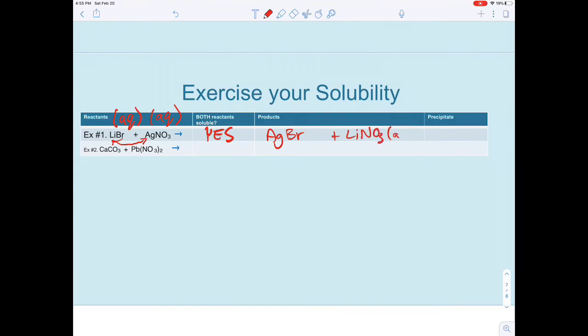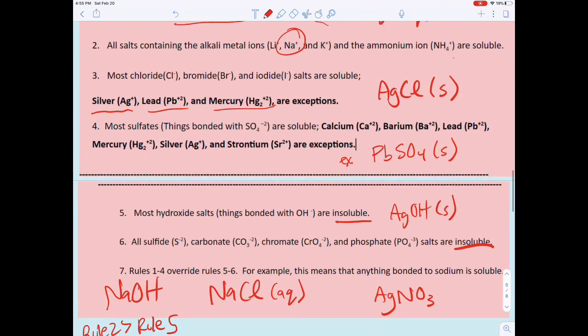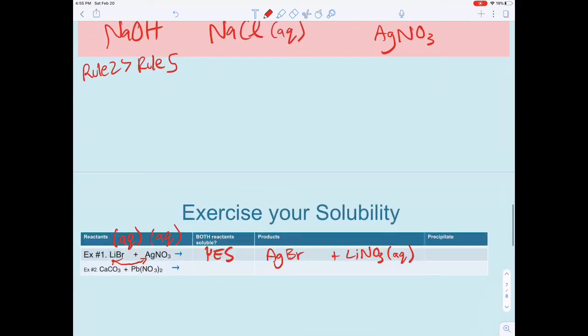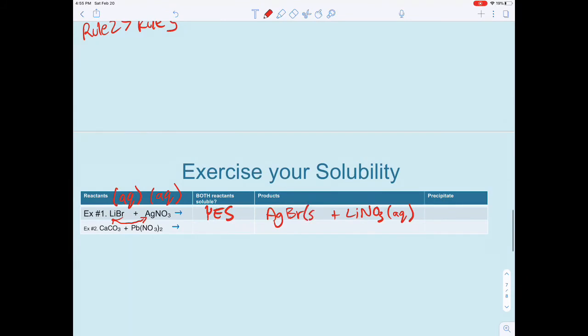Now look at these two products and determine if they're soluble. Silver bromide—let's look at the solubility rules. Bromides are usually soluble, but because this is silver, it's not going to be soluble. It'll be an insoluble precipitate. My precipitate here is silver bromide.